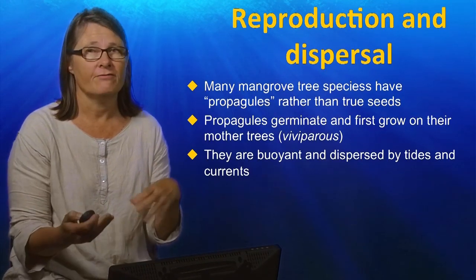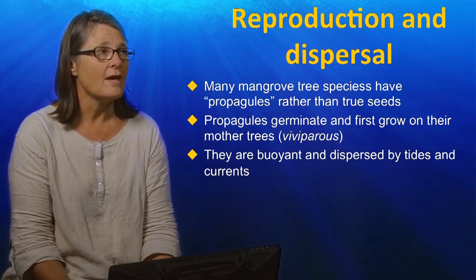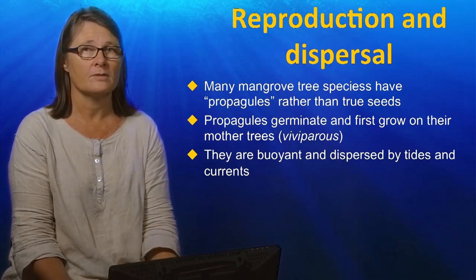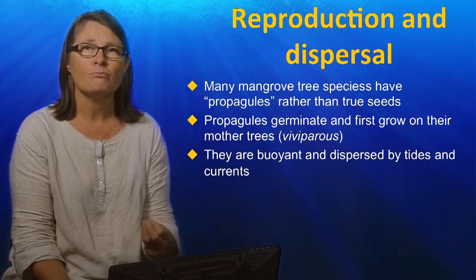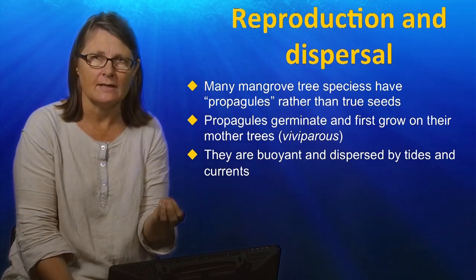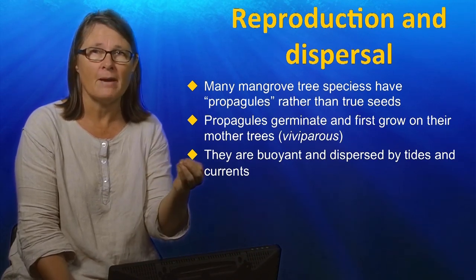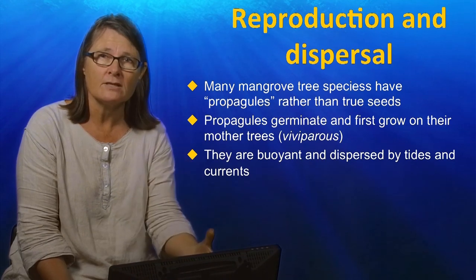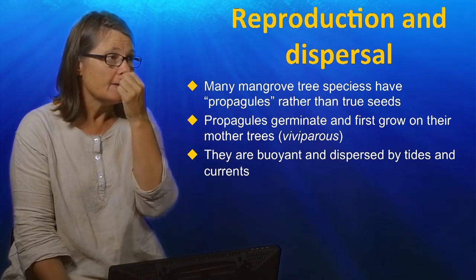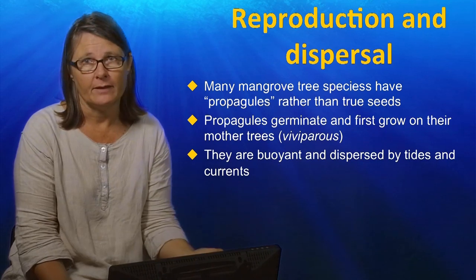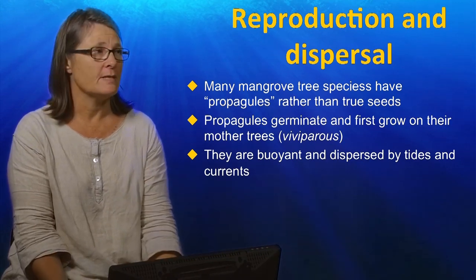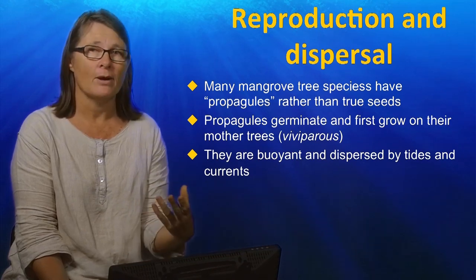Not only are there features of their leaves and roots that are important, but they also have very specialised dispersal and reproductive strategies. Many of the tree species have propagules rather than true seeds. A propagule is a ready-to-go seedling that has already germinated on the parent plant, and once it's dropped into the water it's essentially a whole seedling ready to go. This strategy is called vivipary. These propagules, and also the true seeds produced by some mangrove species, are buoyant and are dispersed by tides and by currents.